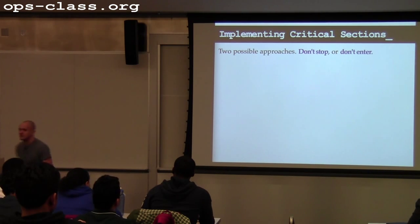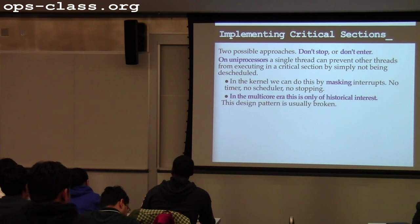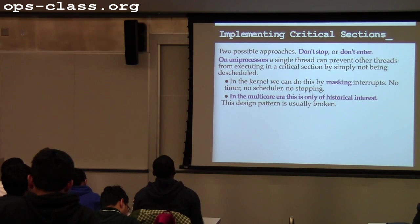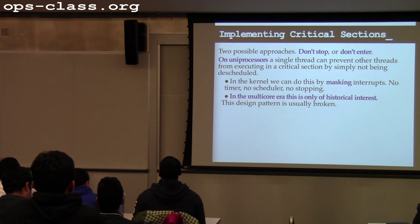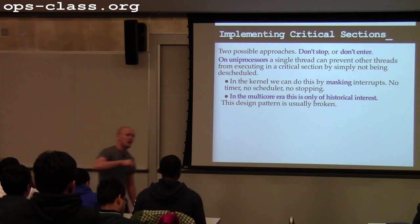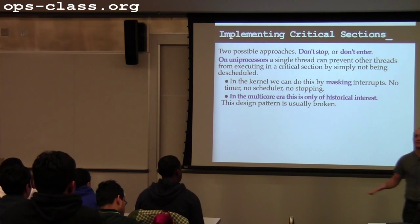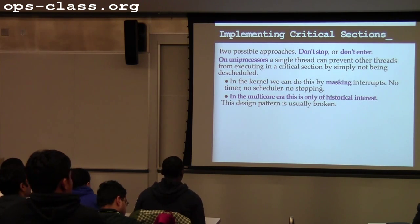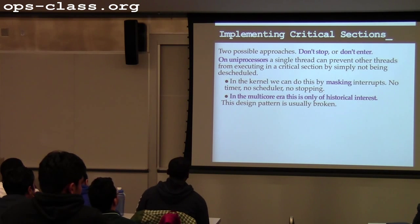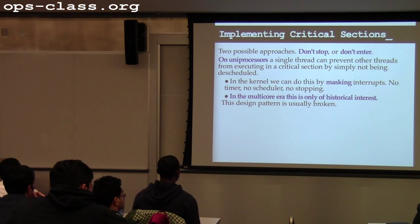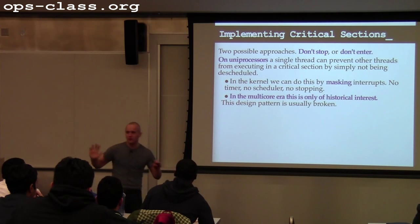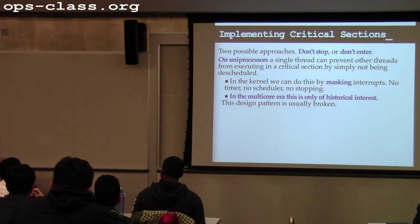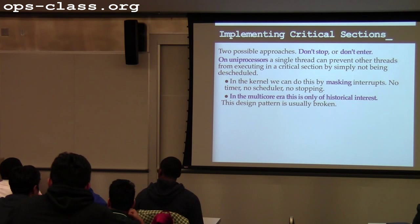There are two ways to implement critical sections. The first — which is broken on multicore systems but worked on unicore — is to simply disable interrupts. As soon as one thread gets inside the critical section, don't let it be descheduled. The kernel says: I'm turning off interrupts, and I am not going to allow anyone to interrupt me until I am finished. By definition, I'll run until I exit that critical section, then enable interrupts again.